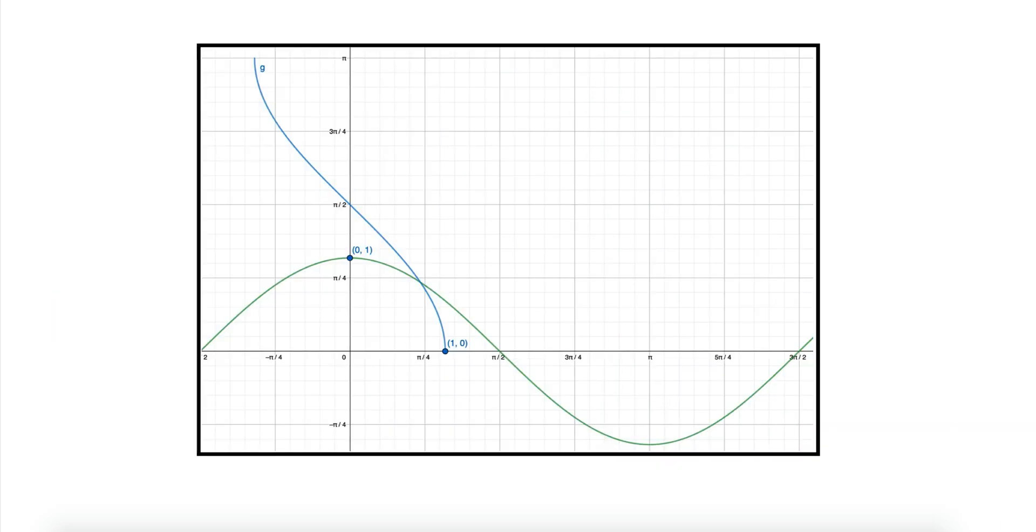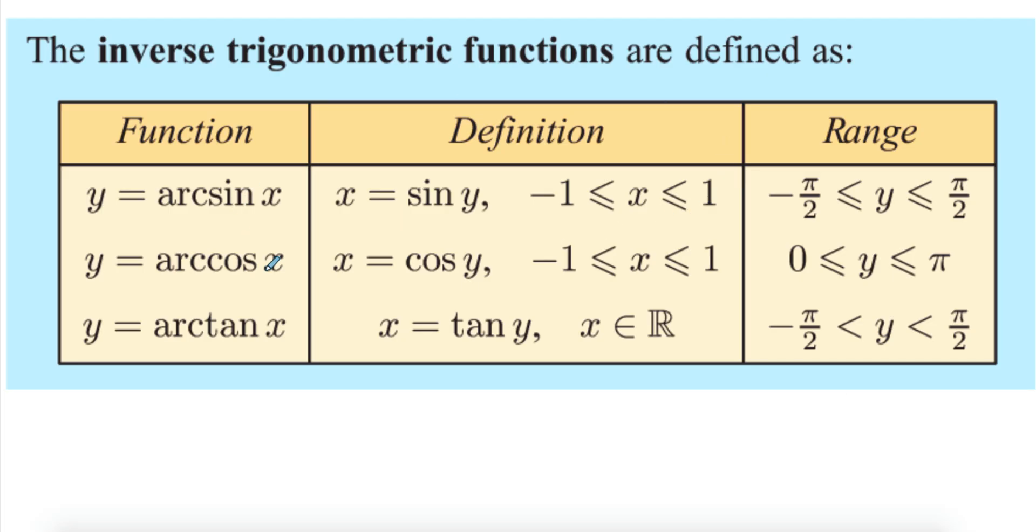More clearly, this is what it would look like. Switching the colors, the blue is my cos inverse and my green is my cos. As you can see, it's completely reflected, but we had to first restrict the domain or else it won't be a proper function.